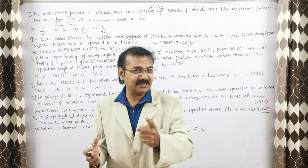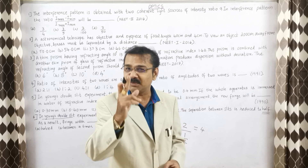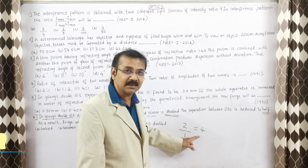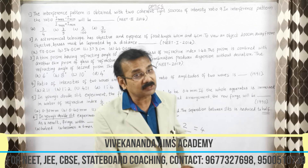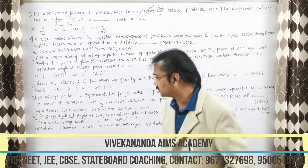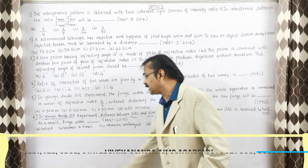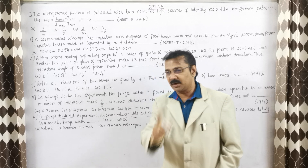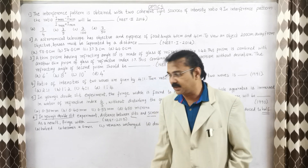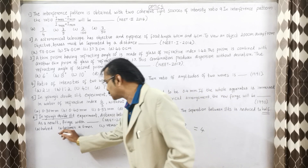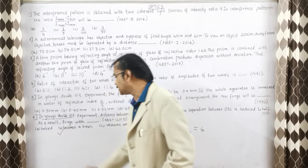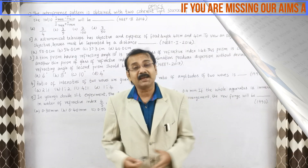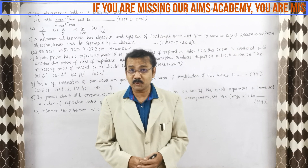We got the answer in a single step and in a few seconds without using any formula or concept. The answer is 4, so the fringe width becomes 4 times. That is option A. I hope you enjoyed learning the 6th question. Let us go for the next quick question.